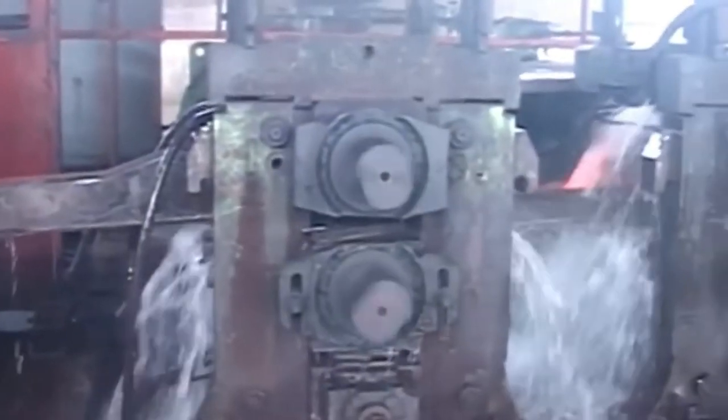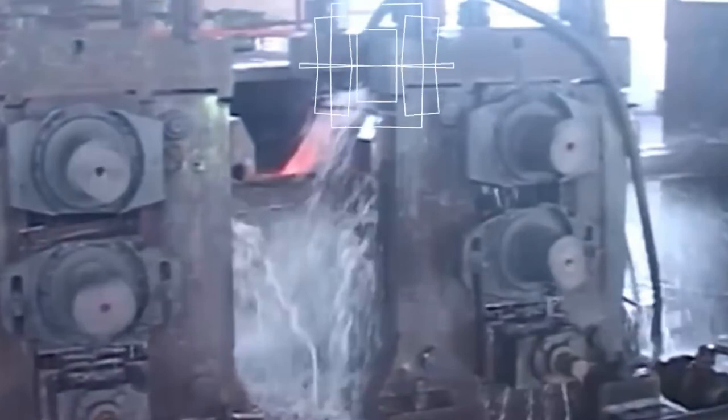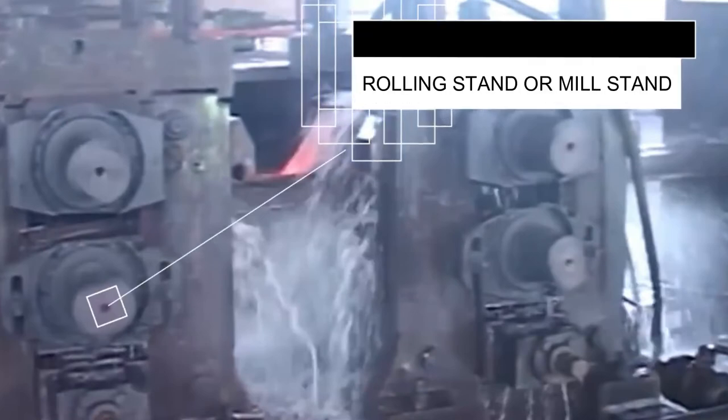In a rolling mill, a set of rolls in their massive housing is called a rolling stand or simply a mill stand.